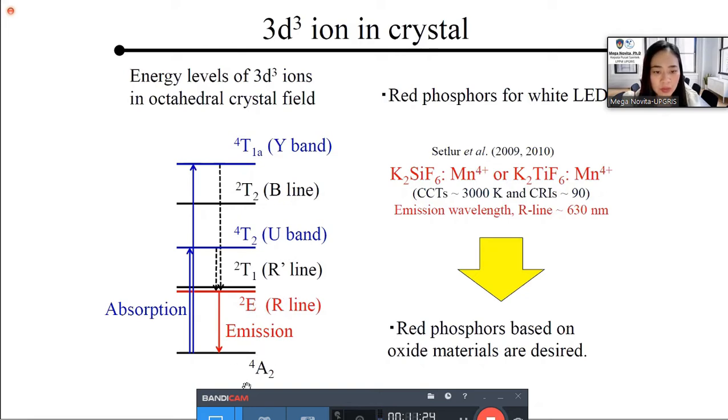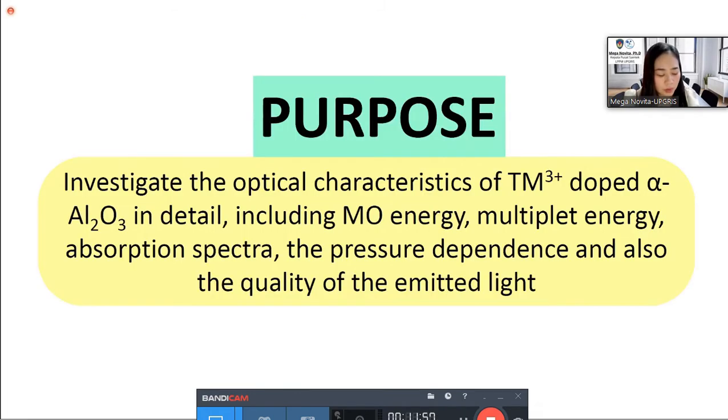In the search of novel red phosphor materials for white LED, manganese 4+ doped fluoride materials such as K2SiF6 or K2TiF6 have been shown to have good luminescence properties. However, since fluoride materials are sensitive to high temperature and high humidity, therefore red phosphor based on oxide materials are desired. So, the purpose of this research is to investigate the optical characteristic of the transition metal ion in alpha alumina in detail, including molecular orbital energy, multiplet energy, absorption spectra, the pressure dependence, and also the quality of the emitted light which can be represented by the color coordinates.